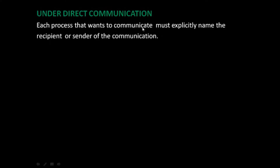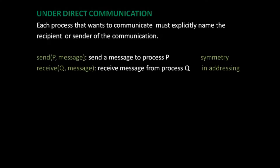Under direct communication, each process that wants to communicate must explicitly name the recipient or sender of the communication. The sender has to specify the name of the receiver and the receiver has to specify the name of the sender. Suppose there are two processes P and Q.